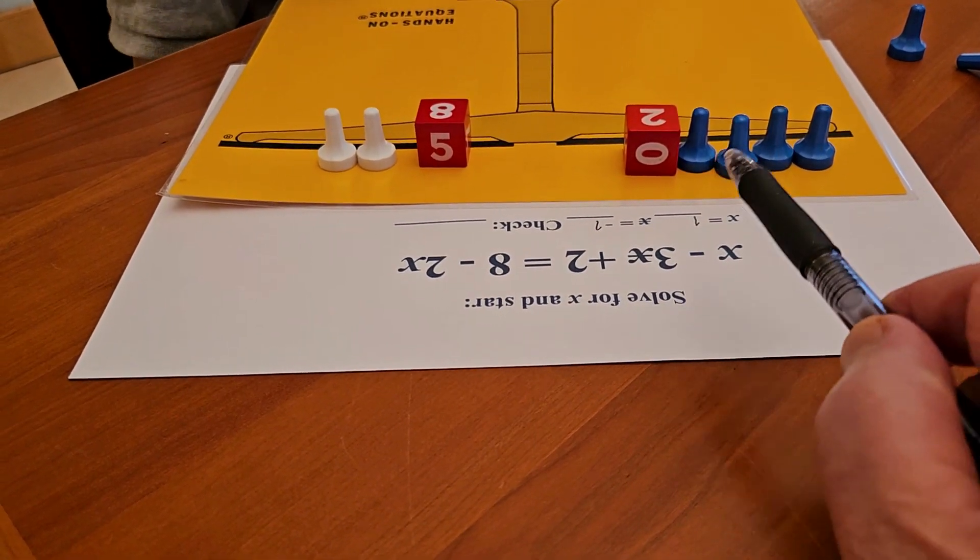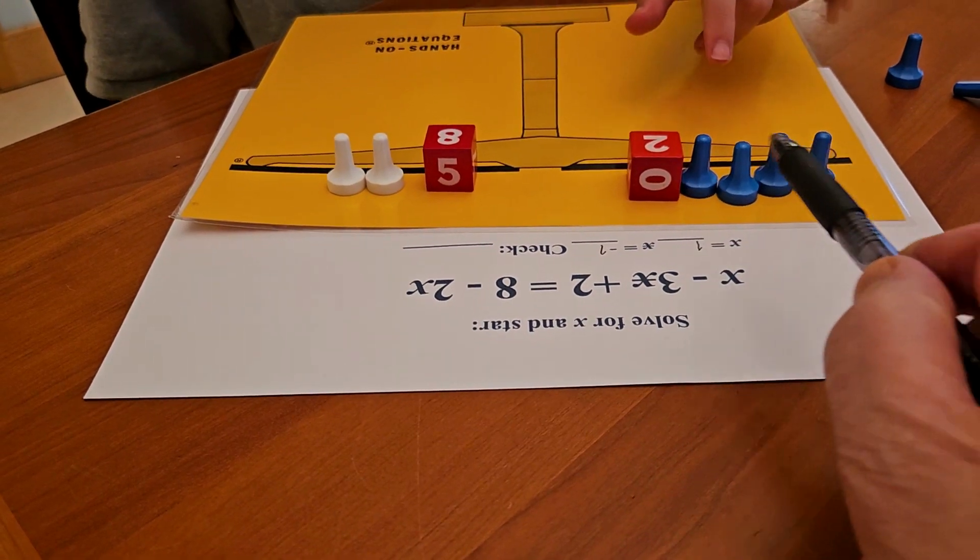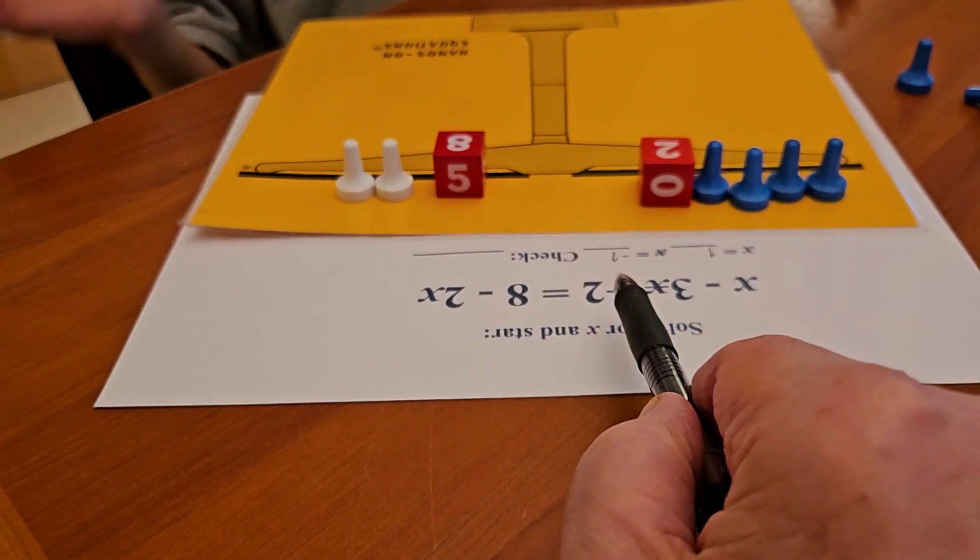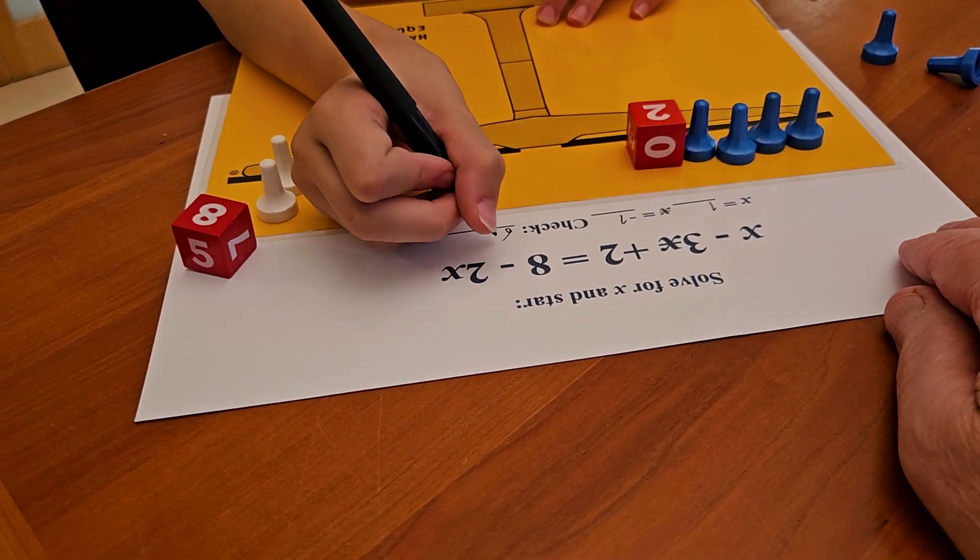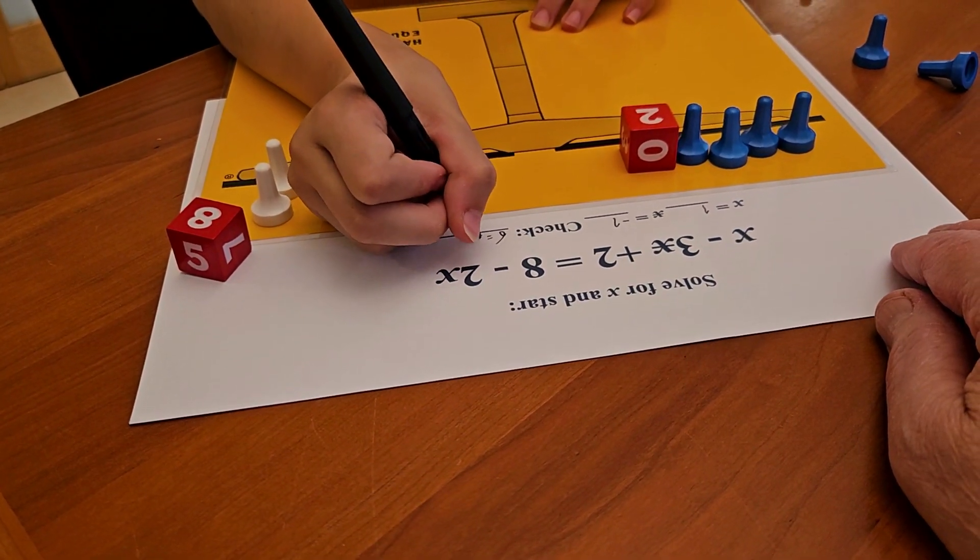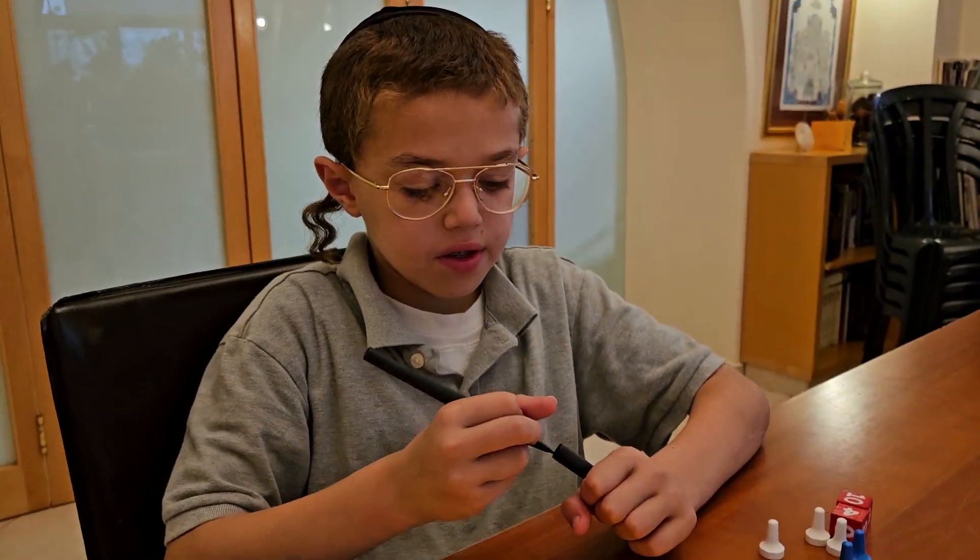Now, if X is one, how much is this side? Six. And if star we set is negative one, how much is this side? Six. Okay, so the check will be six is equal to six. Okay, David, very good.